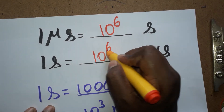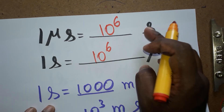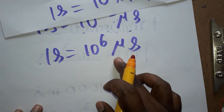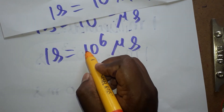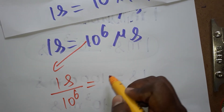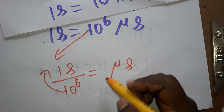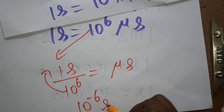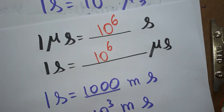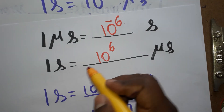So 1 second is 10 power 6 microseconds. Now we convert 1 microsecond to seconds. Since 1 second equals 10 power 6 microseconds, dividing both sides: 1 second divided by 10 power 6 equals 1 microsecond. Therefore, 1 microsecond is equal to 10 power minus 6 seconds.